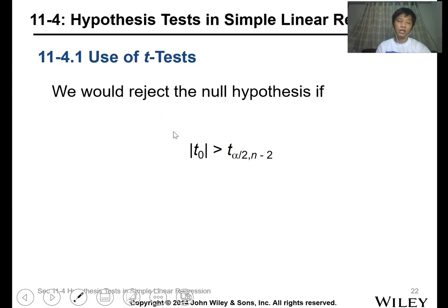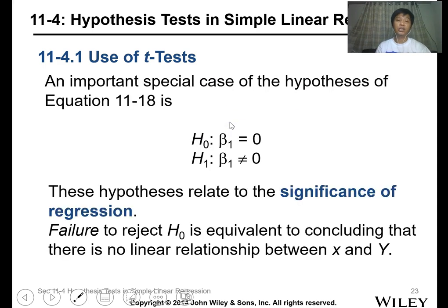An important special case of the hypothesis is when the null hypothesis is that the slope of your model equals zero, meaning there's no linear regression or the data is non-linear. This hypothesis relates to the significance of regression. Failure to reject H_0 is equivalent to concluding that there's no linear relationship between your x and y values.